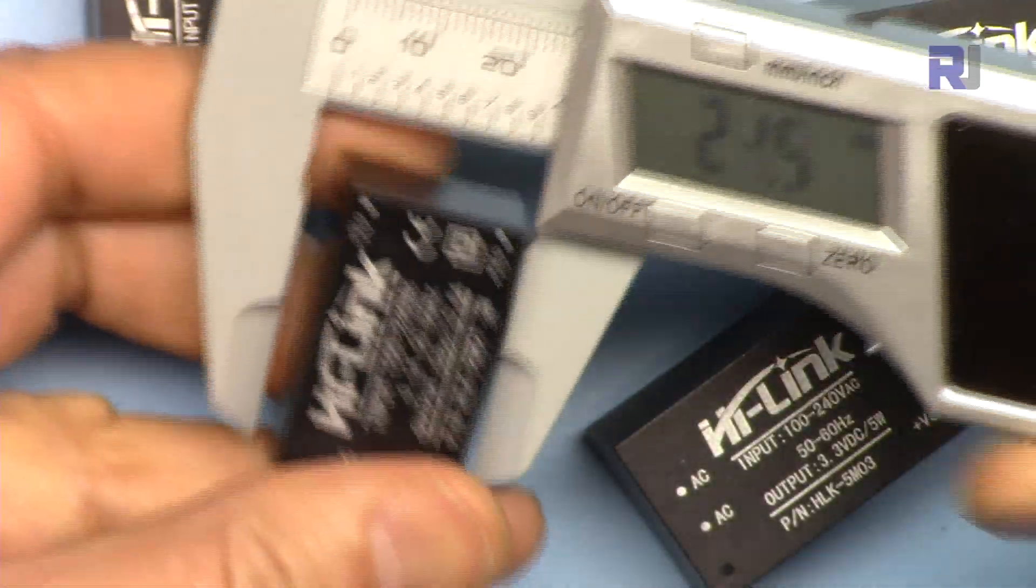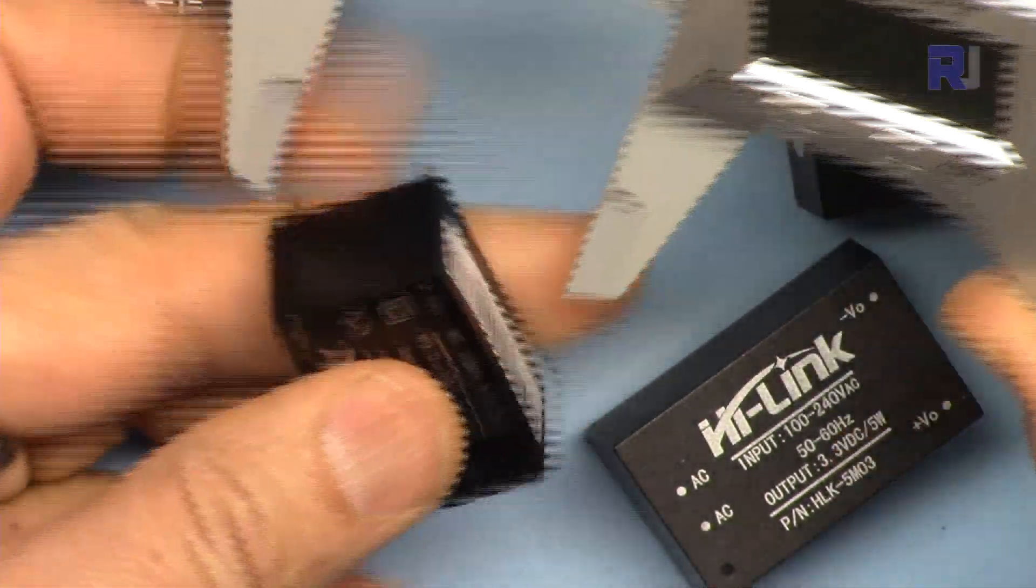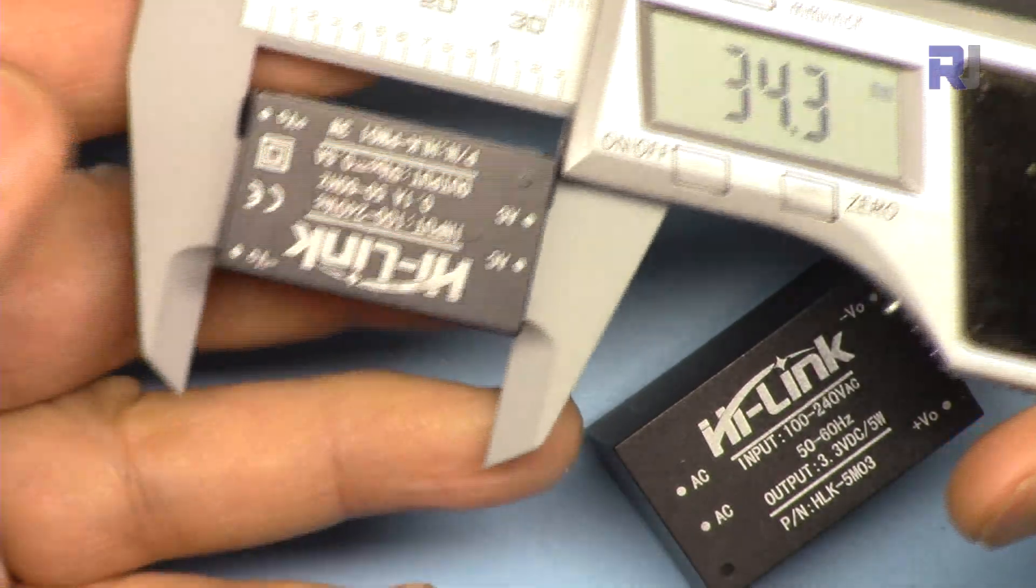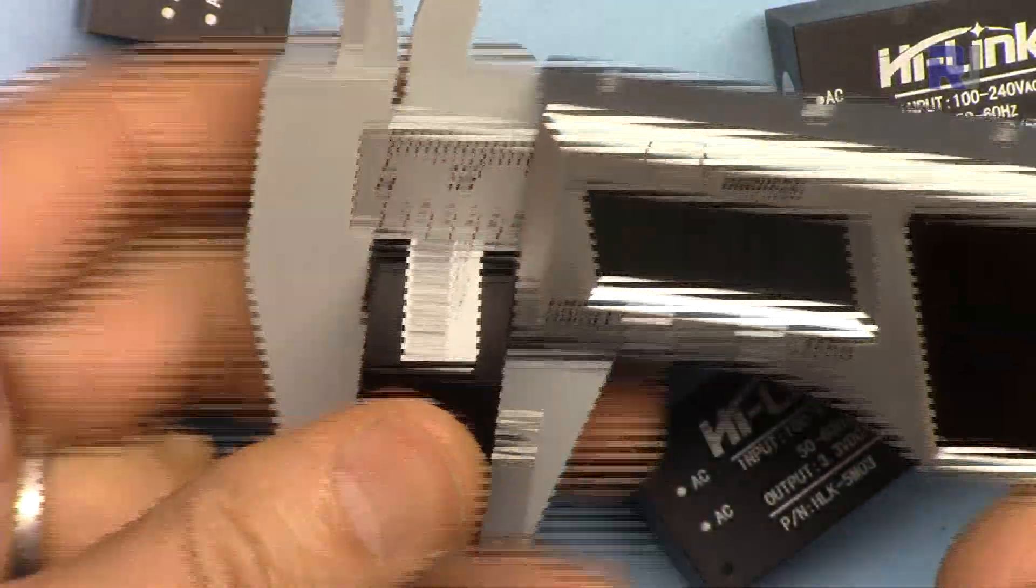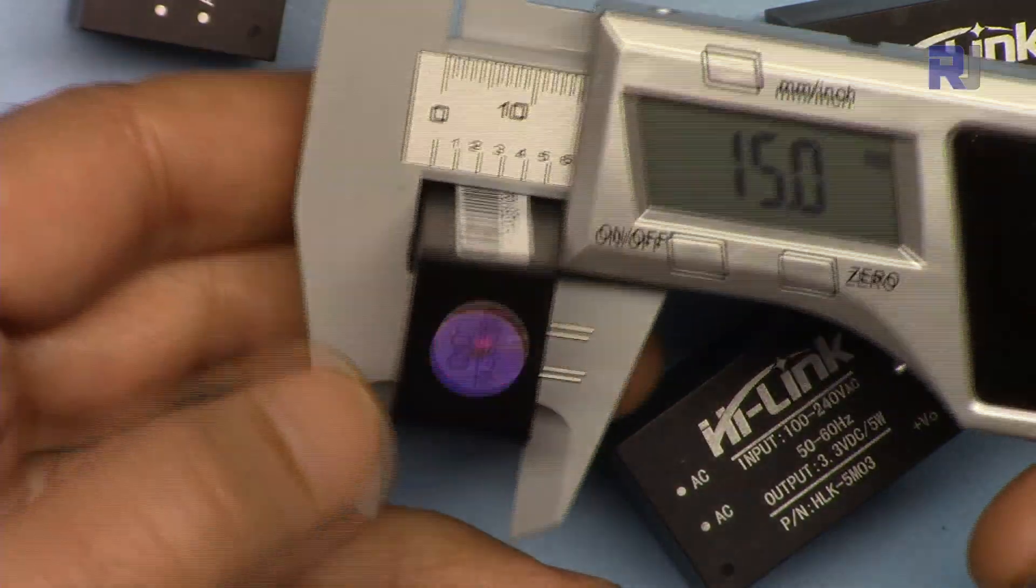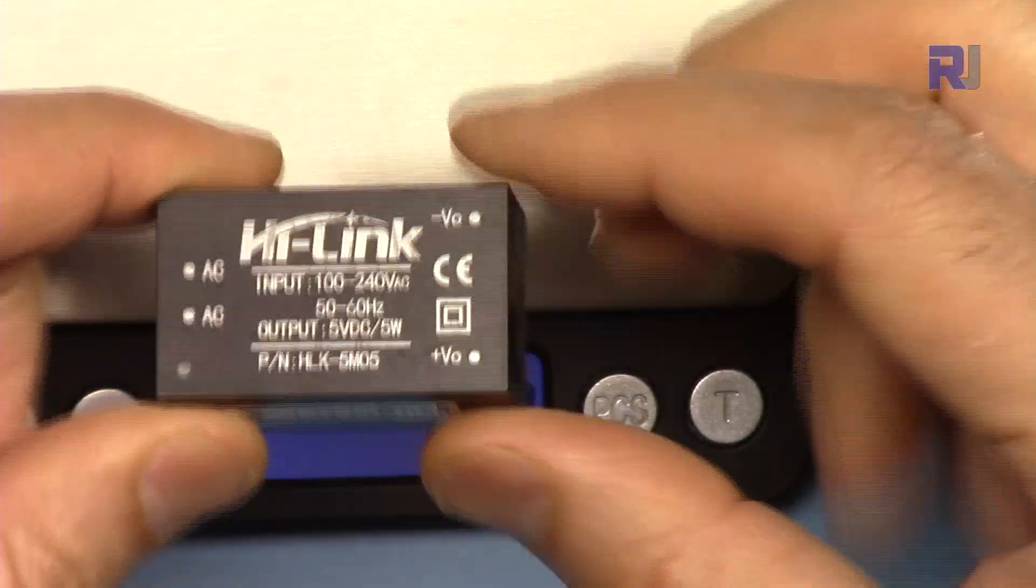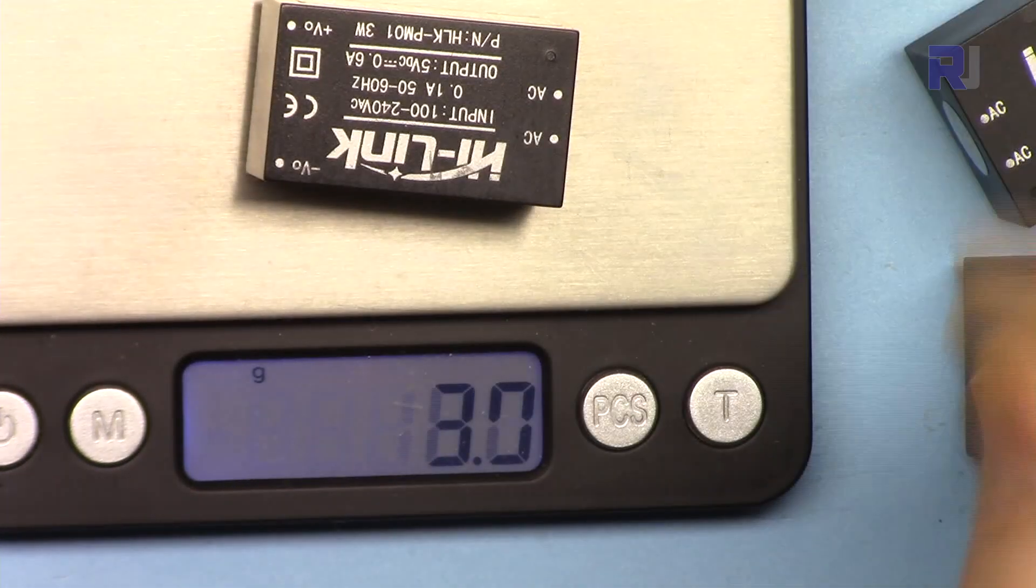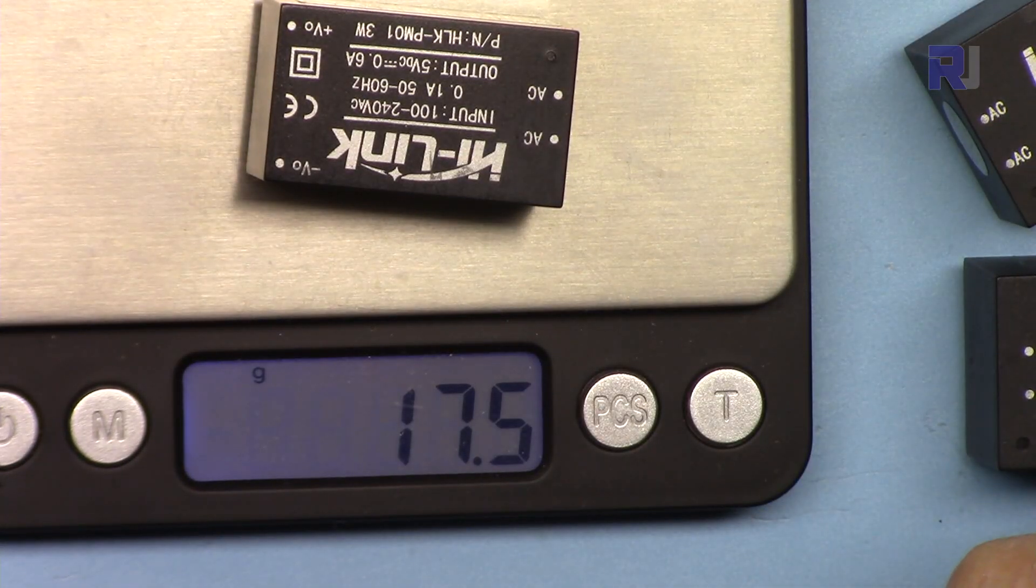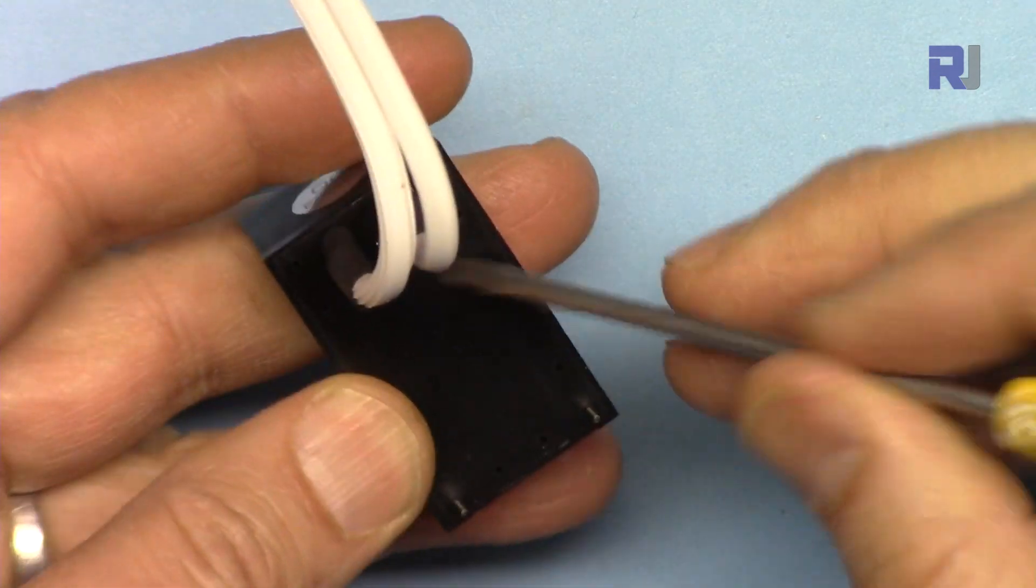For the 3 watt, the length is 20.2 millimeters, 33.4 millimeters wide, and 15 millimeter is the height. If you are interested in weight, the largest size one is 24.7 grams and the 3 watt or smaller one is 17.6 grams.